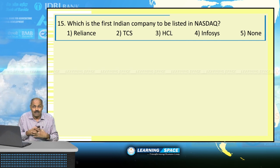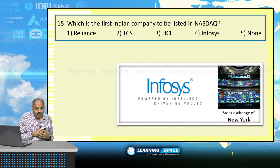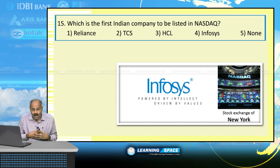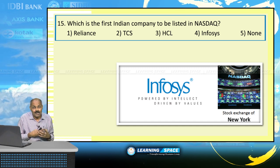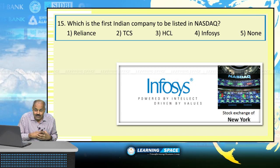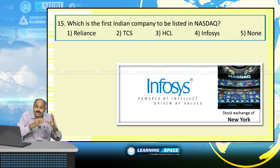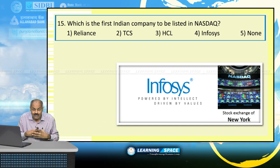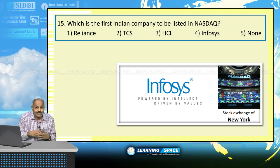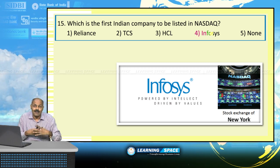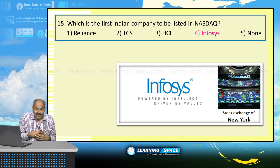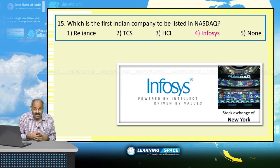Which is the first Indian company to be listed on Nasdaq? Nasdaq — National Association of Securities Dealers Automated Quotations — is one of the biggest stock exchanges in the world, based in New York. Infosys is the first Indian company to be listed on Nasdaq, listed in the year 1999.